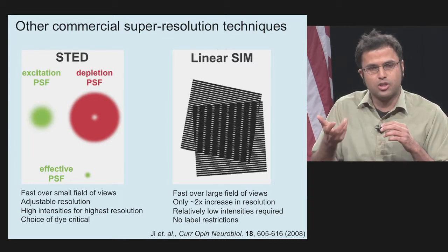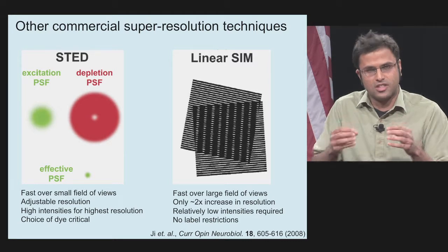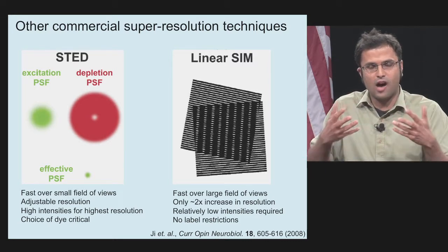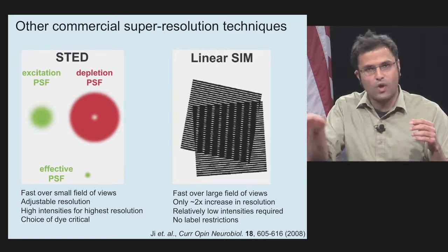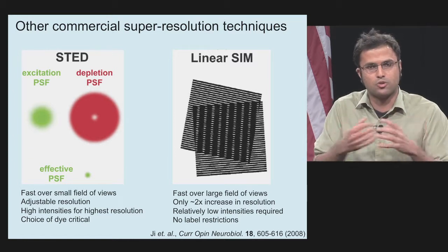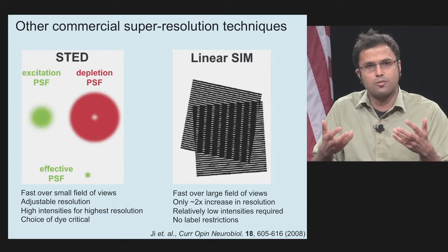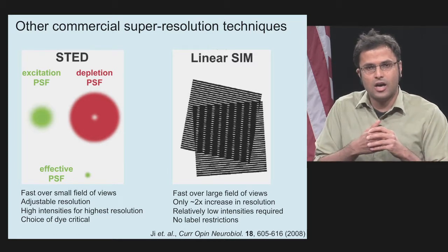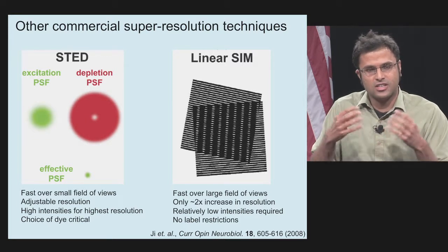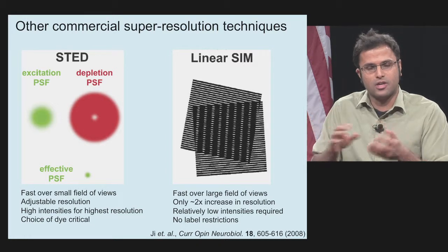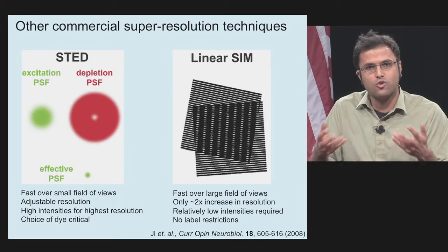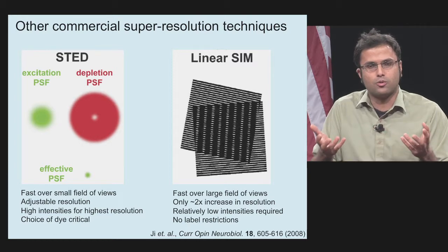Stimulated emission depletion microscopy, or STED, forces all fluorescence except for a very narrow sub-diffractive region within the point spread function radius off, and this sub-diffractive region is rastered throughout the sample to build up a super-resolution image. STED is very fast over small fields of view and can be applied to somewhat thicker samples like mouse brains, but dye choice is critical and you need very high intensities for the highest resolution. Structured illumination microscopy is far more gentle on the sample; in its linear form it only affords a factor-of-two resolution gain, but there are no label restrictions.